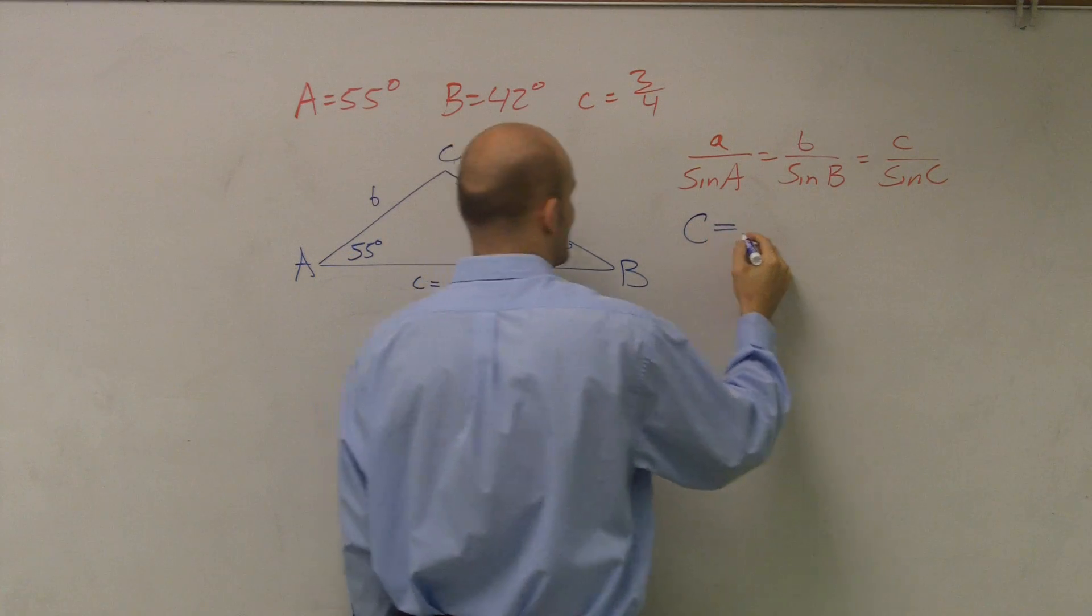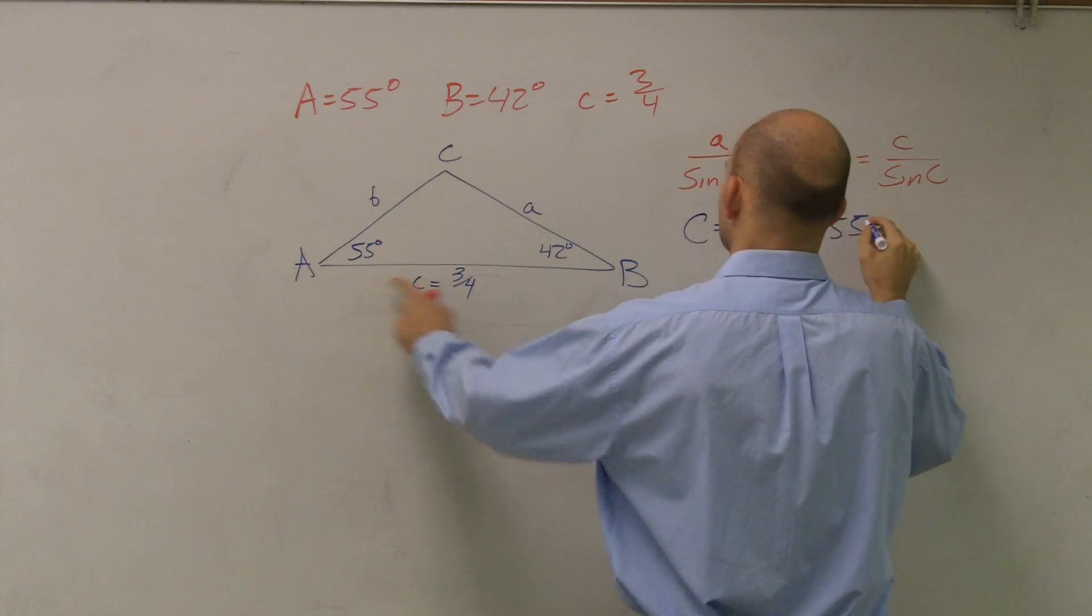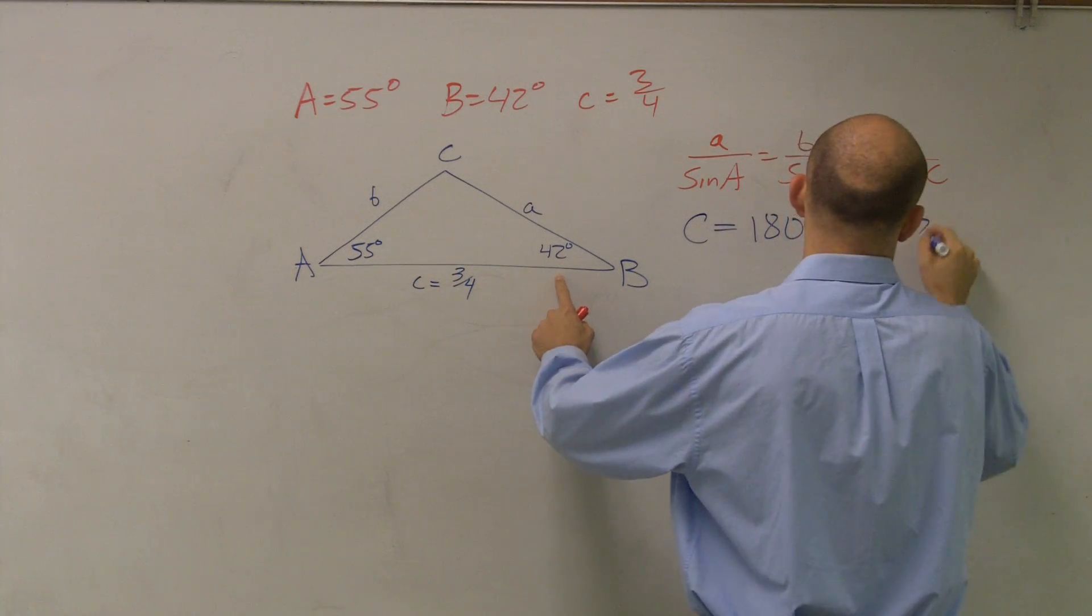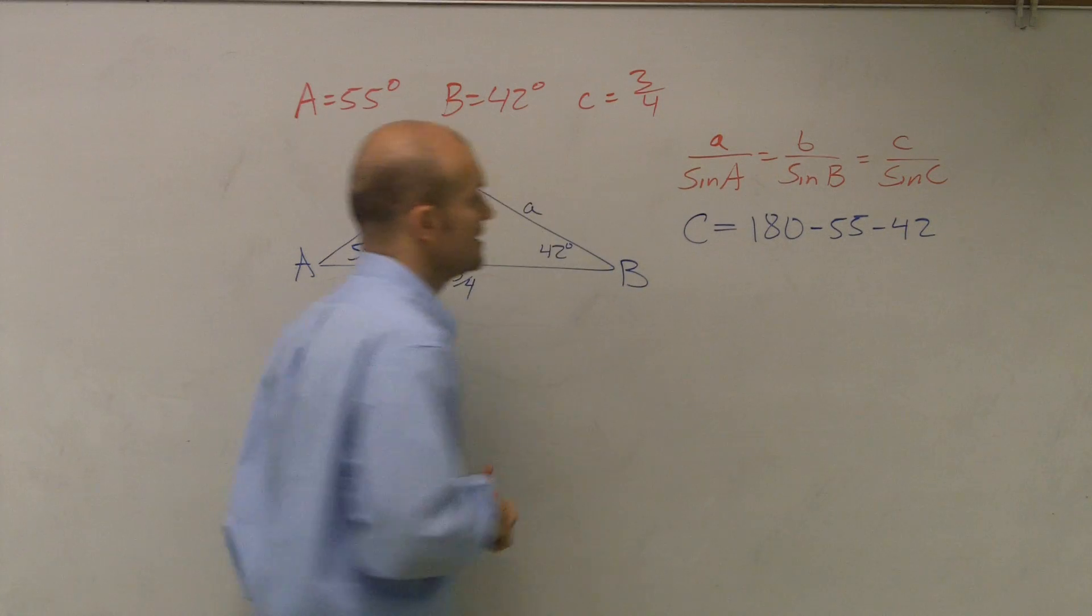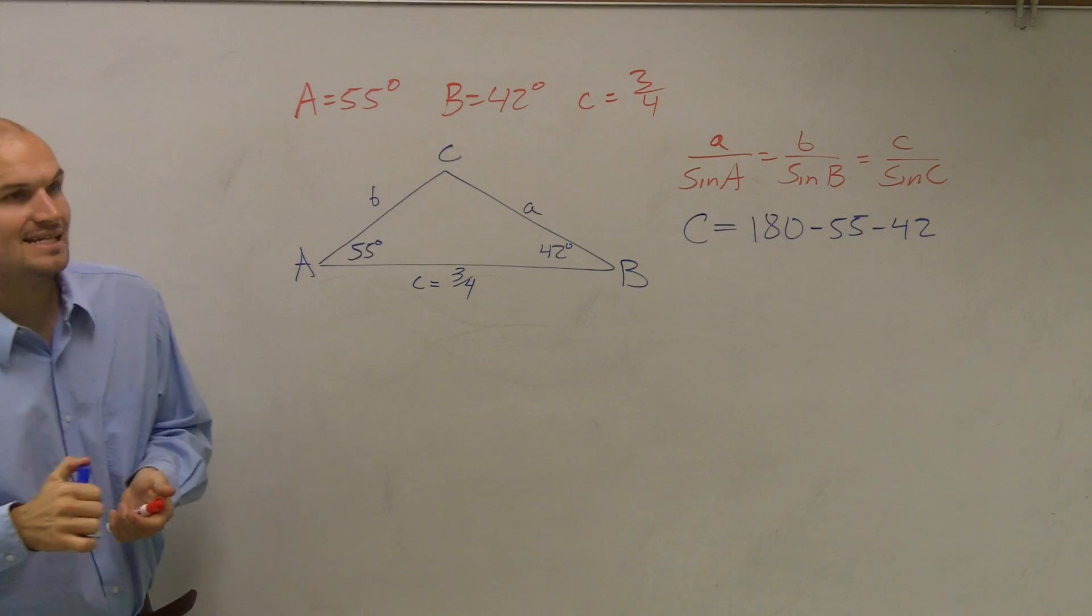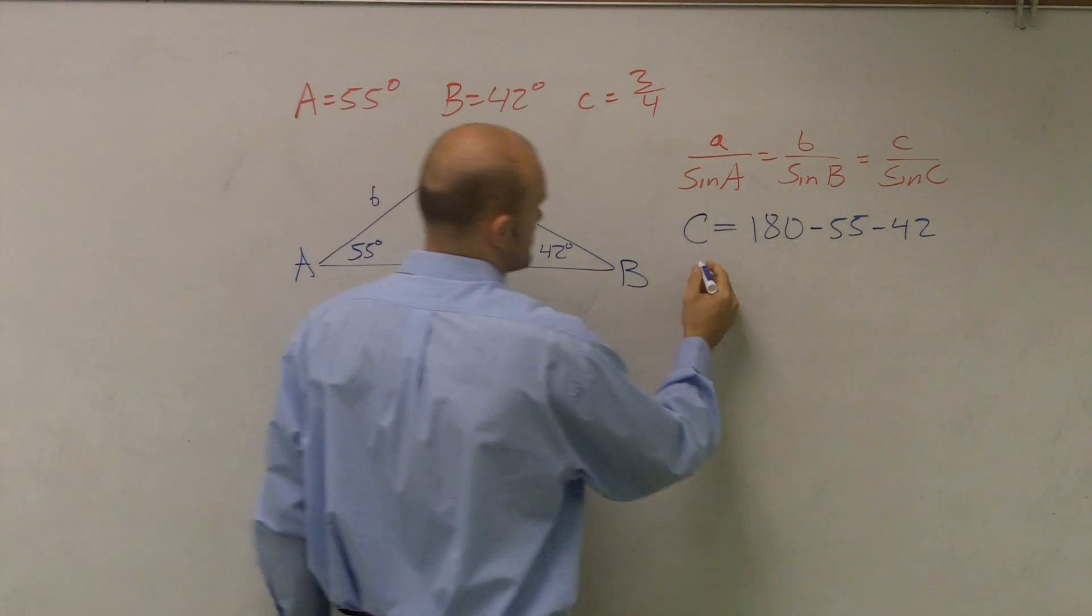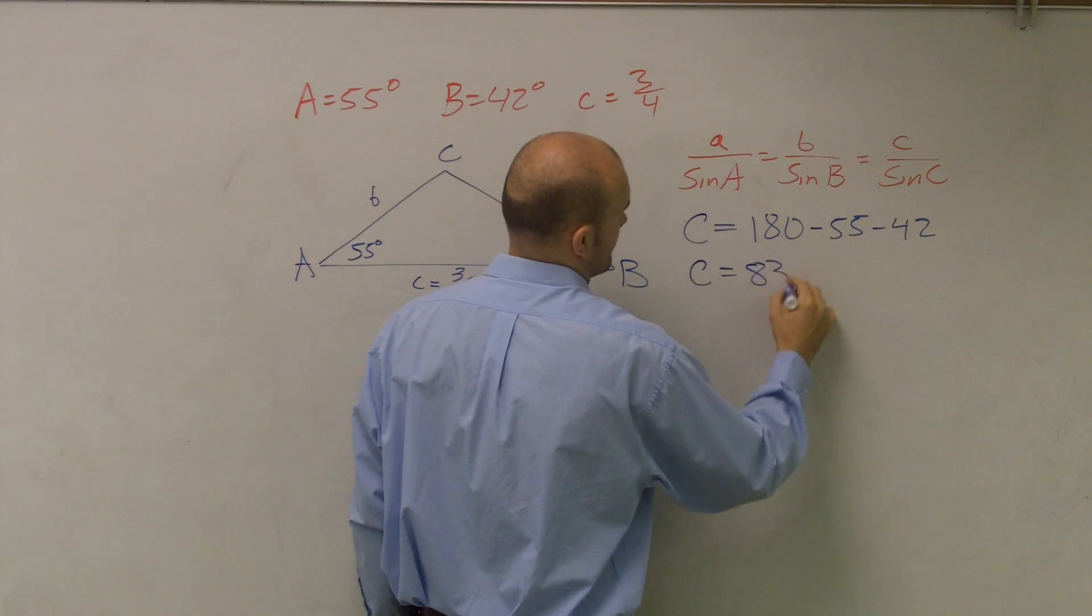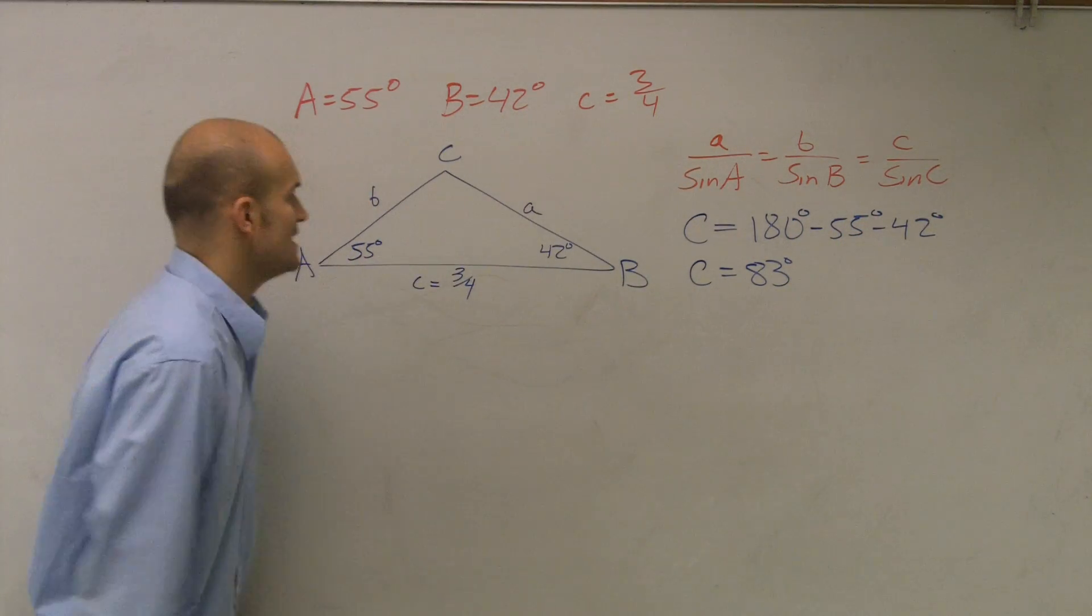So all I do is the angle of C is equal to 180 degrees minus 55 minus 42. And so those two added up together give me 97. So therefore, C is going to equal 83 degrees. So C equals 83 degrees.